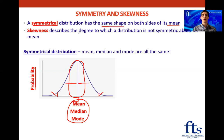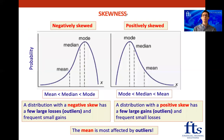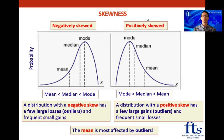Skewness describes the degree to which a distribution is not symmetric about its mean. Before we get into skewness, there's some good news: we don't have to know any calculations for this. You may have seen ugly-looking formulas for skewness in the books, but we don't have to be concerned about those. A distribution with skewness can either be negatively or positively skewed.